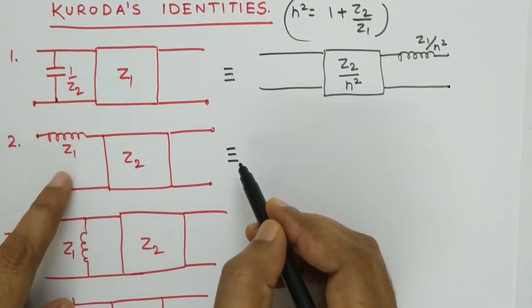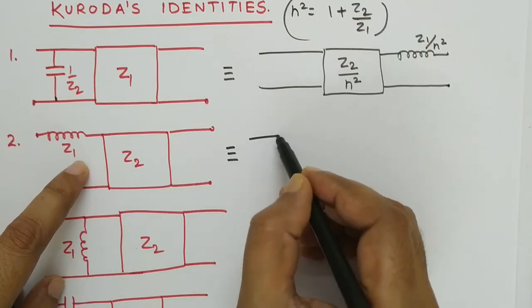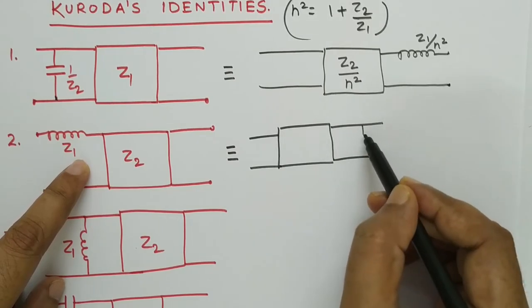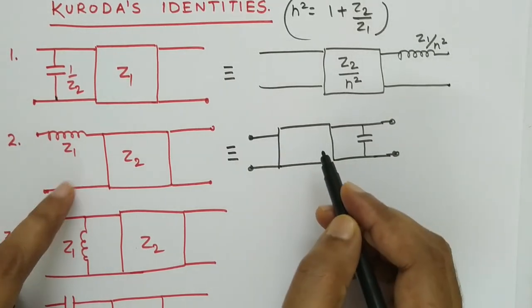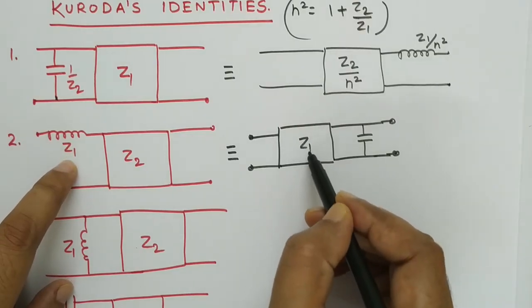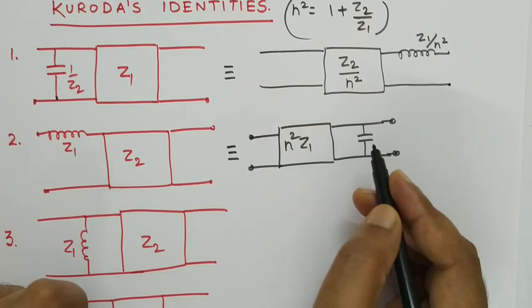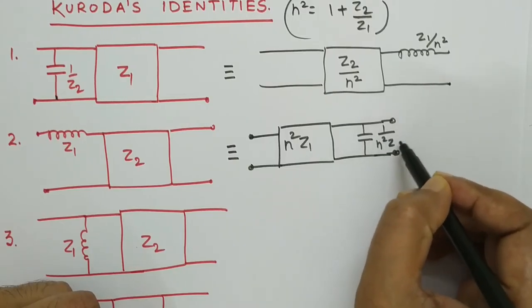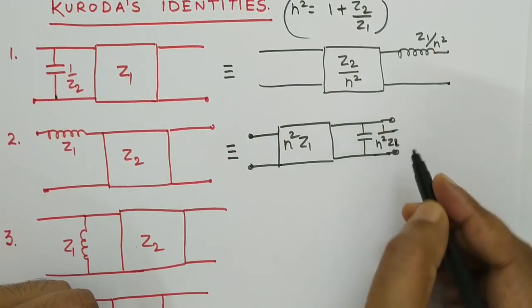For the second identity, a series inductor is converted into a shunt capacitor. The series inductor moves to the right and becomes the shunt element. The transformed transmission line value becomes N²·Z1, and the capacitor stub value becomes 1/(N²·Z2). So the impedance of that open stub, which was 1/Z2, becomes 1/(N²·Z2), while the transmission line scales up by N².